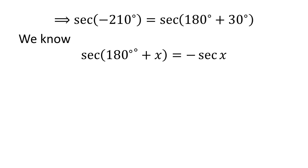As we know, the trigonometry identity secant of 180 degrees plus x is equal to minus secant of x. The video explaining how to derive this identity is appearing in the upper right corner. Also, the URL address of the video has been mentioned in the description section.